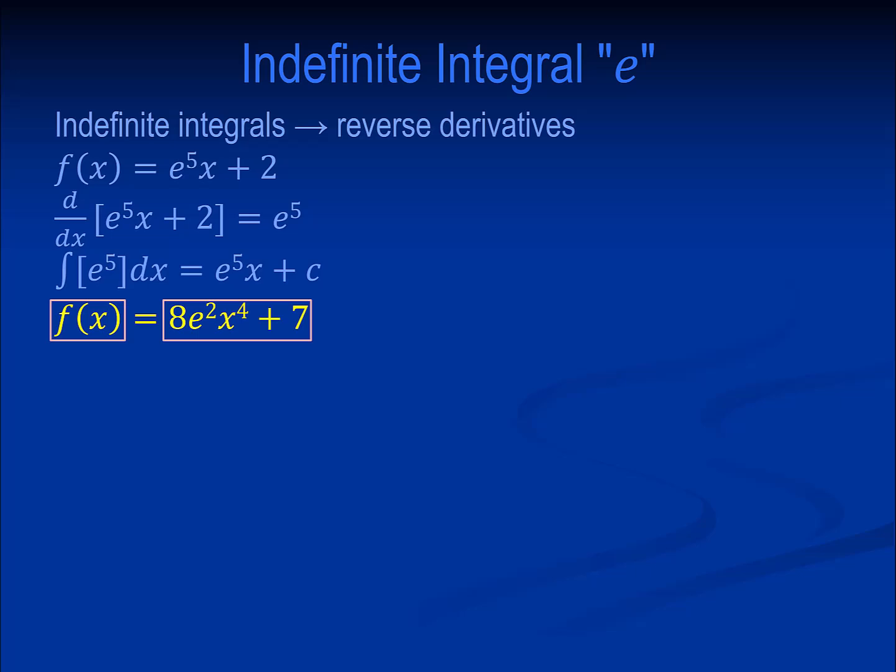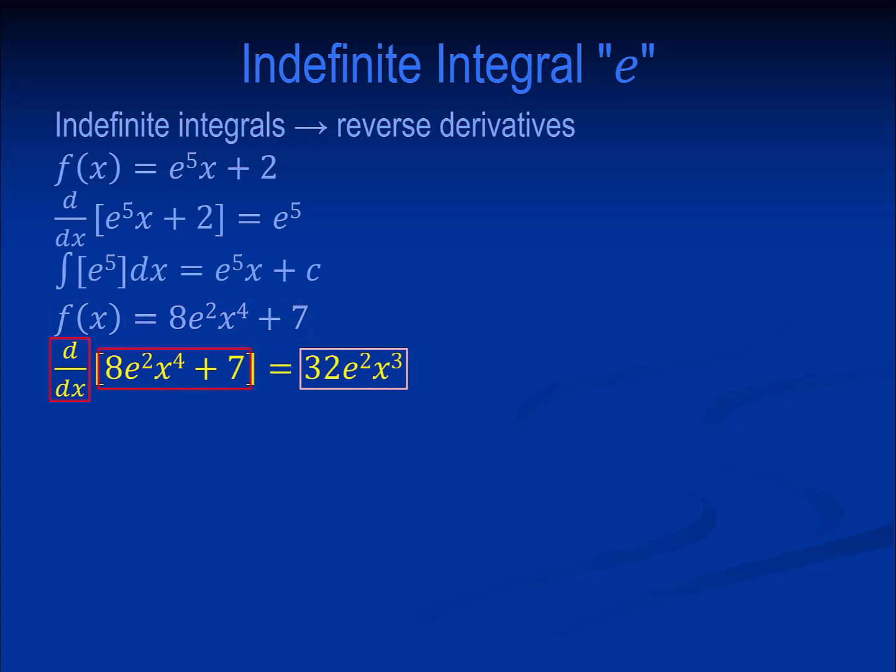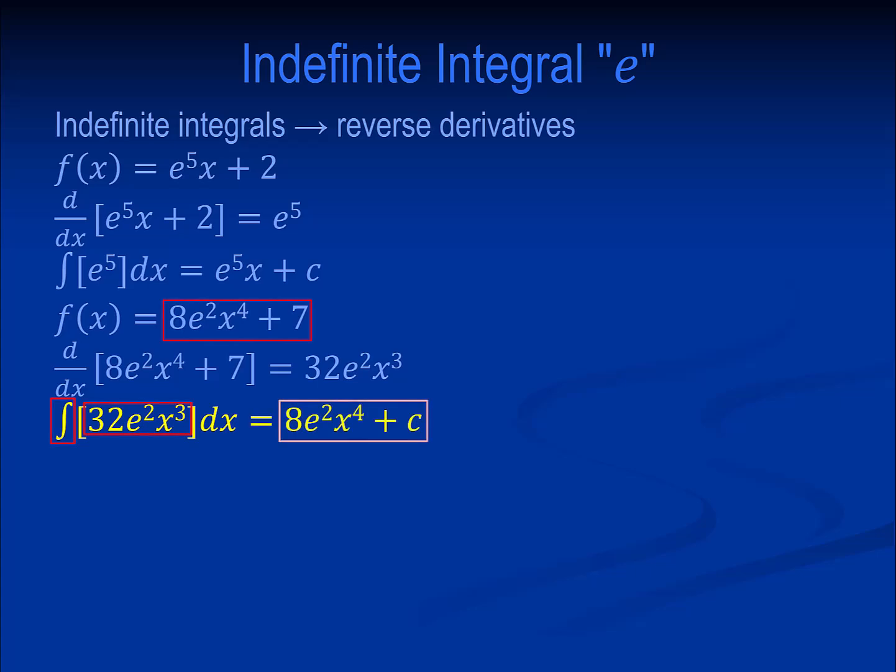How about f of x equals 8 e squared times x to the fourth plus 7? The derivative equals 32 e squared times x cubed. The indefinite integral of 32 e squared times x cubed results in an answer that is almost identical to the equation before the derivative.